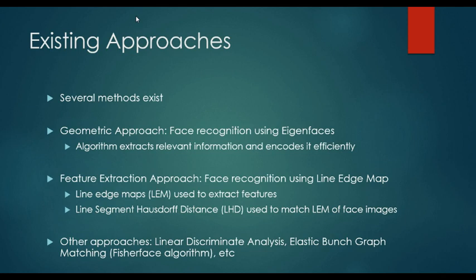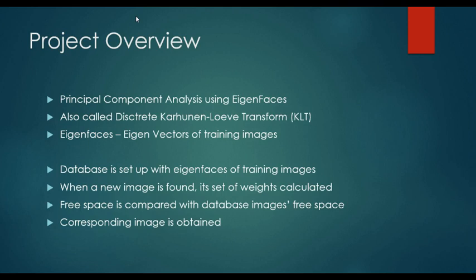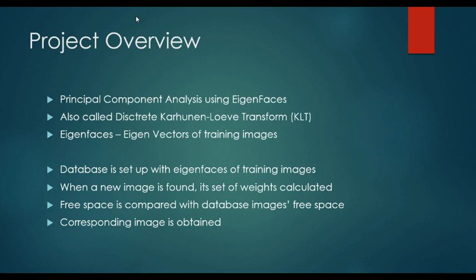The approach we will be dealing with is principal component analysis using eigenfaces. Principal component analysis is a mathematical procedure that uses an orthogonal transformation. It converts possibly correlated values into linearly uncorrelated values called principal components. Principal components can be thought of as the identity that the face is made up of, and matching this identity with the database images is the basis on which this method works. The eigenfaces are essentially the eigenvectors of the trained images in the database.